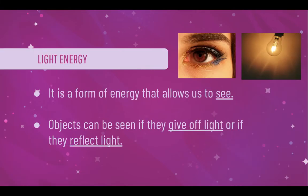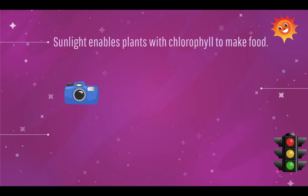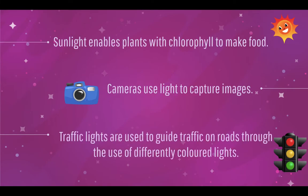Light energy is a form of energy that allows us to see. Objects can be seen if they give off light or if they reflect light. Here are some uses of light energy. Sunlight enables plants with chlorophyll to make food. Cameras use light to capture images. Traffic lights are used to guide traffic on roads through the use of differently colored lights.